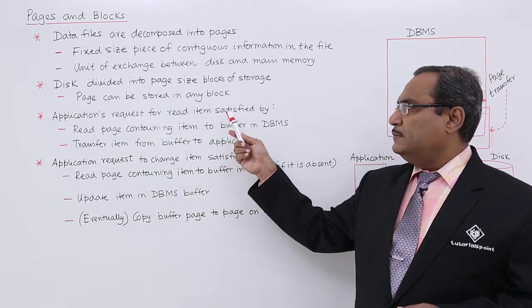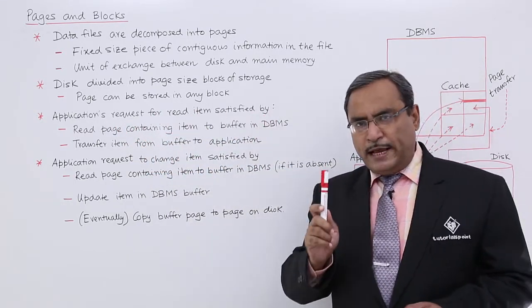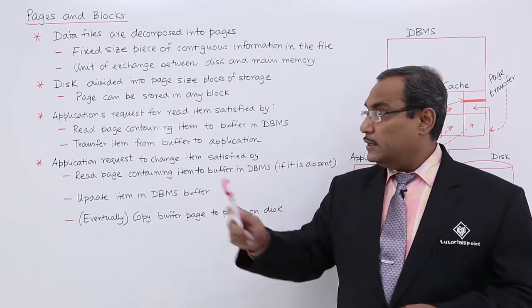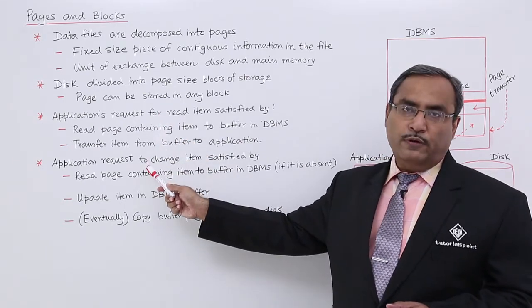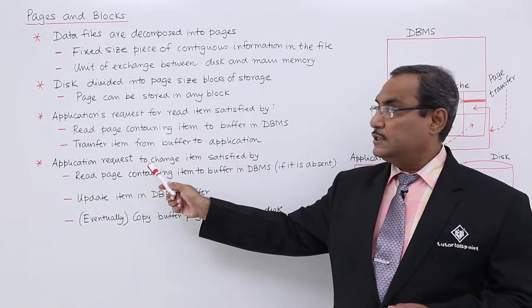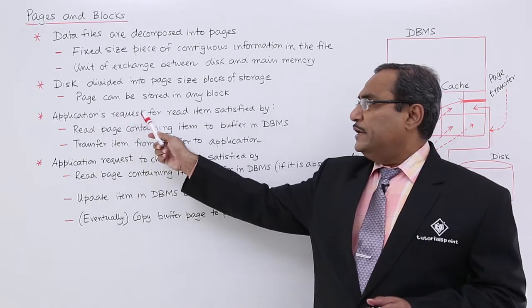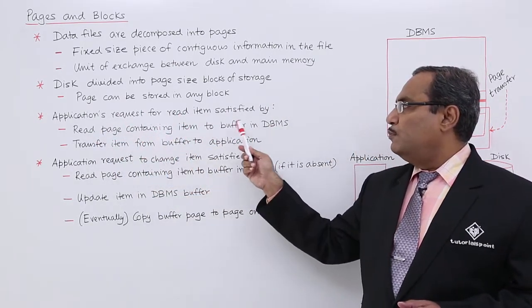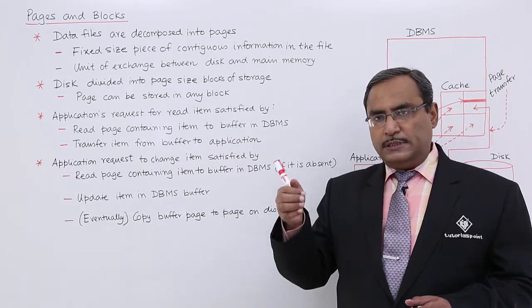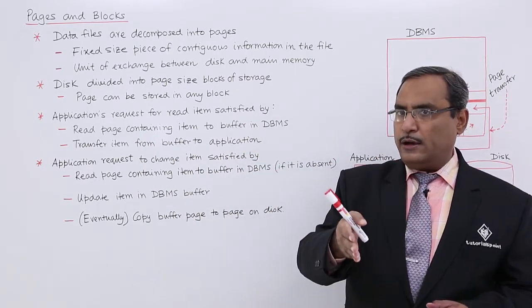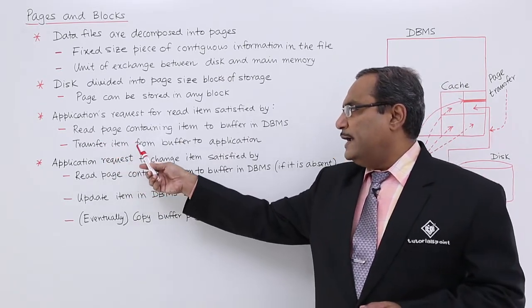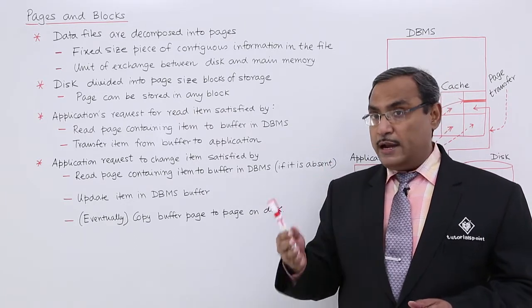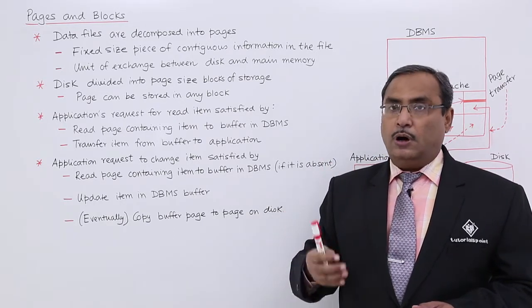An application can perform two operations on a data item: read and write. For a read request, the process is: read the page containing the item into the buffer in the DBMS, then transfer the item from the buffer to the application that requested the read operation.